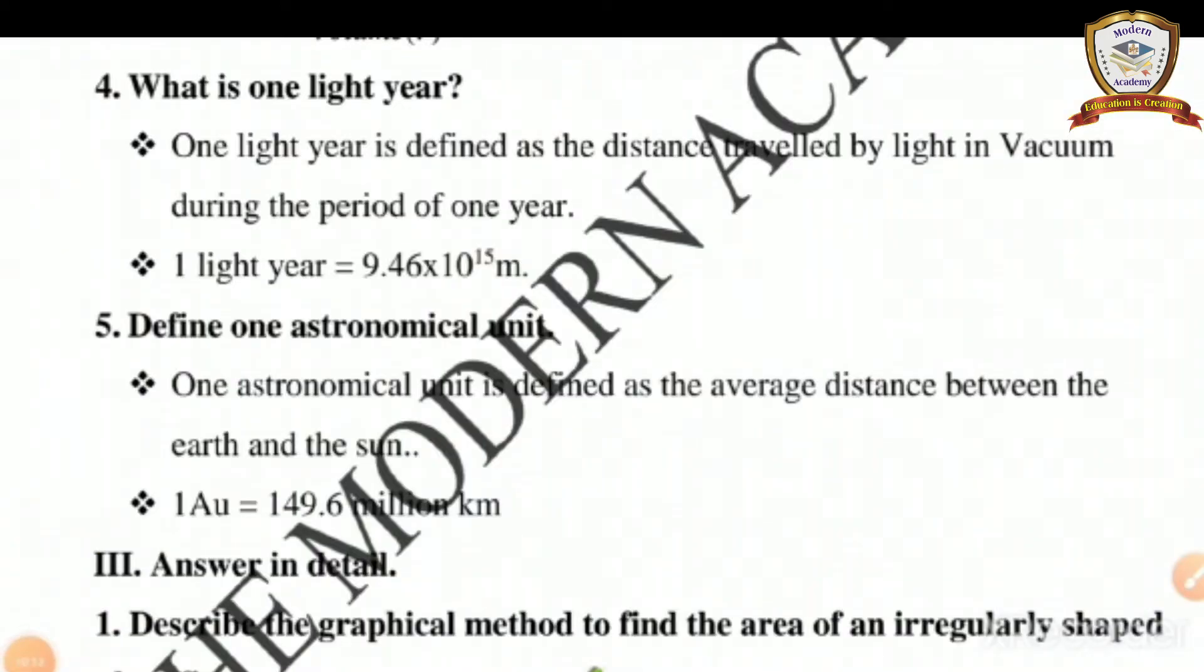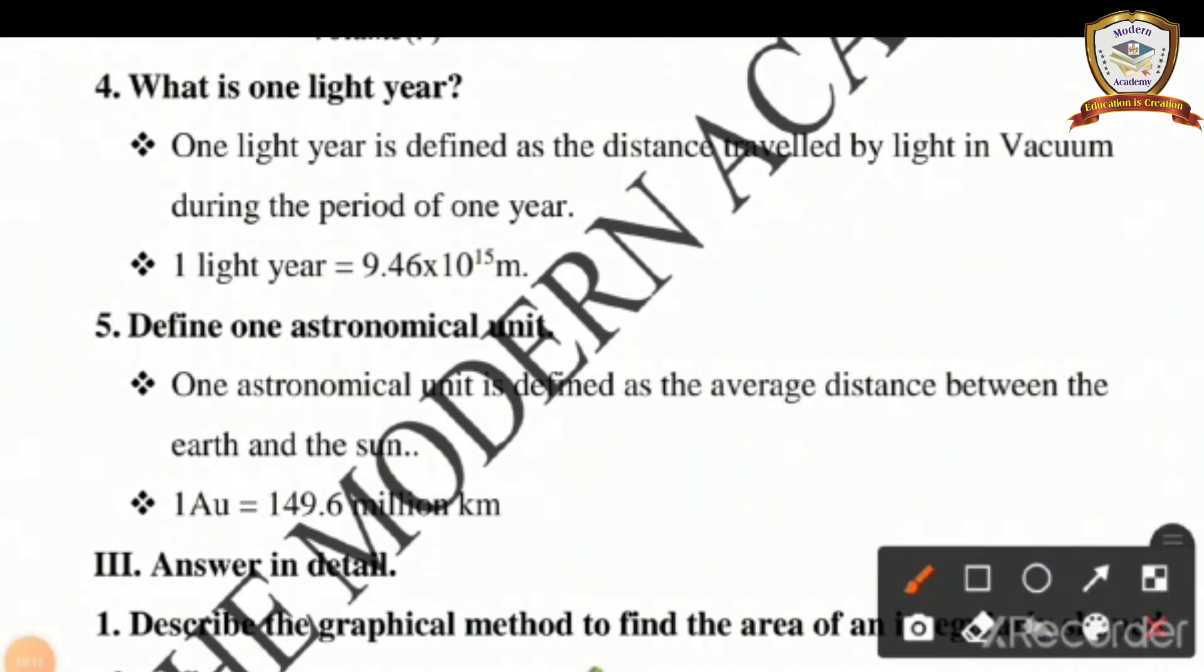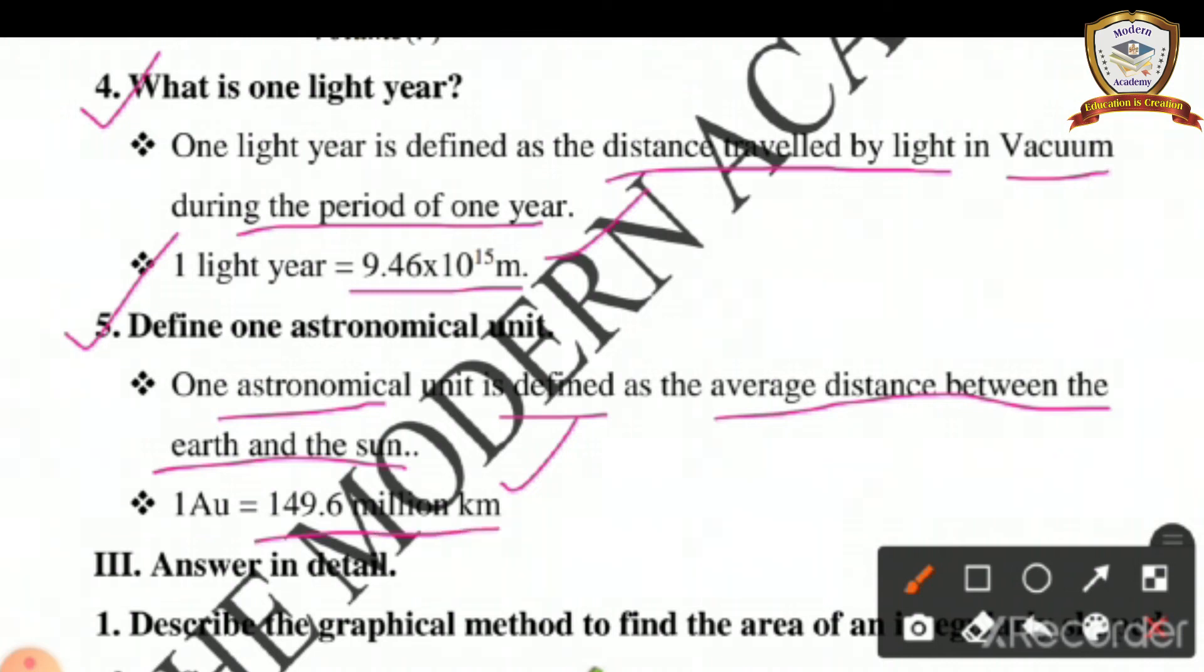Now time for former questions which means material reading. What is one light year? One light year is defined as distance traveled by light in vacuum during the period of one year. One light year equals 9.46 × 10¹⁵ meters. Define one astronomical unit. One astronomical unit is defined as the average distance between the Earth and the sun. The value is 149.6 million kilometers.